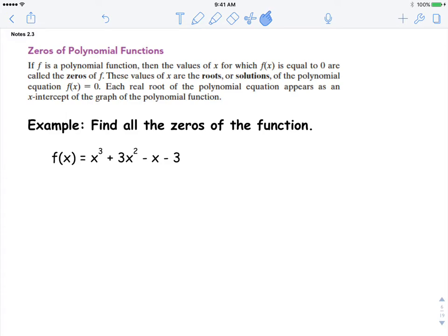Alright, we're going to work with the zeros of a polynomial function. If a function is a polynomial function, then the values of x for which the function is equal to zero are called the zeros of the function. These values of x are called the roots or the solutions of the polynomial function when we equal it to zero.